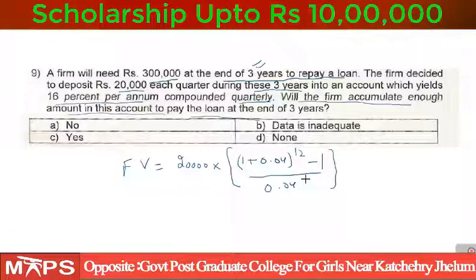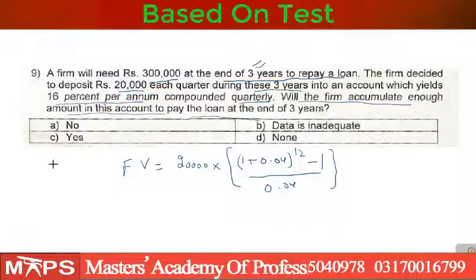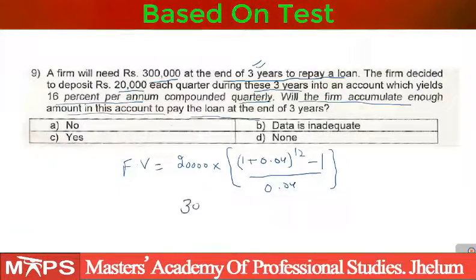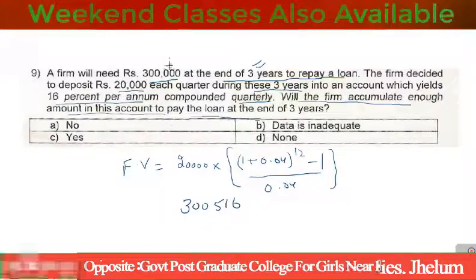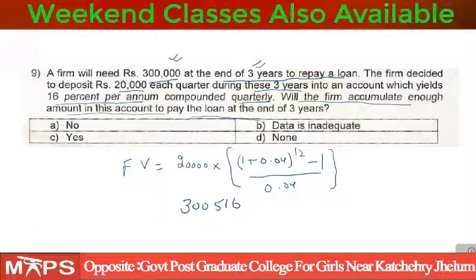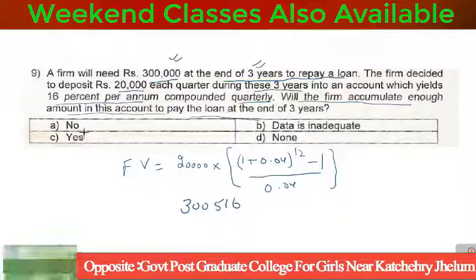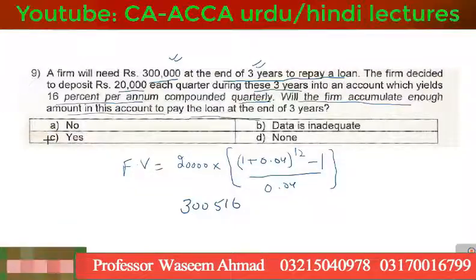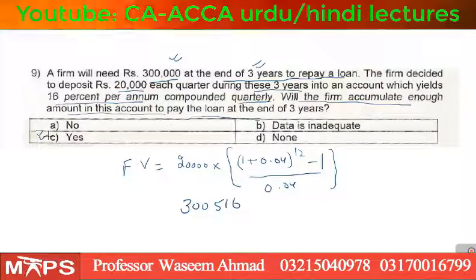When you solve this, the future value comes out to 3,560,000. The firm needs 3,000,000. Since 3,560,000 > 3,000,000, enough amount will accumulate. So the answer is yes — option C.